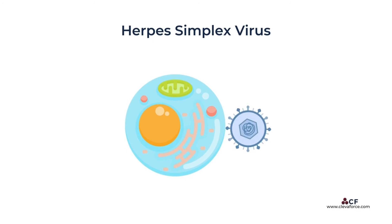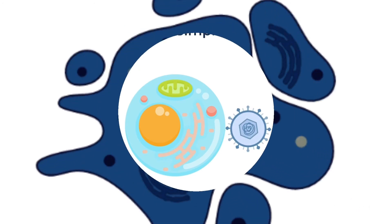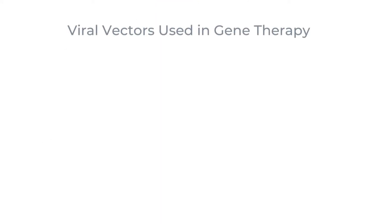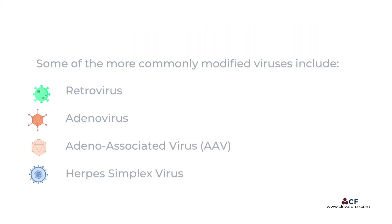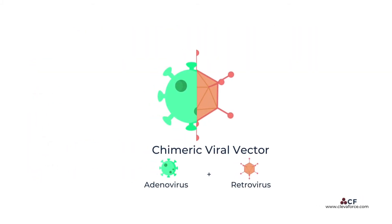Herpes simplex virus can deliver large amounts of exogenous DNA. However, cytotoxicity and maintenance of transgene expression remain as obstacles. Many gene therapy clinical trials rely on retroviruses or adenoviruses to deliver the desired gene. Today, chimeric viral vector systems that combine advantageous properties of two or more viral systems are now being explored.